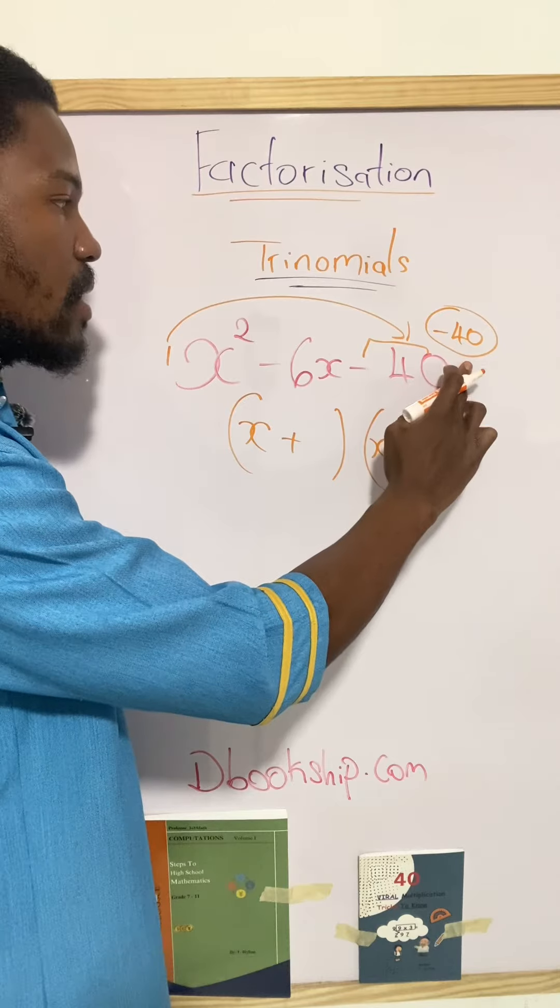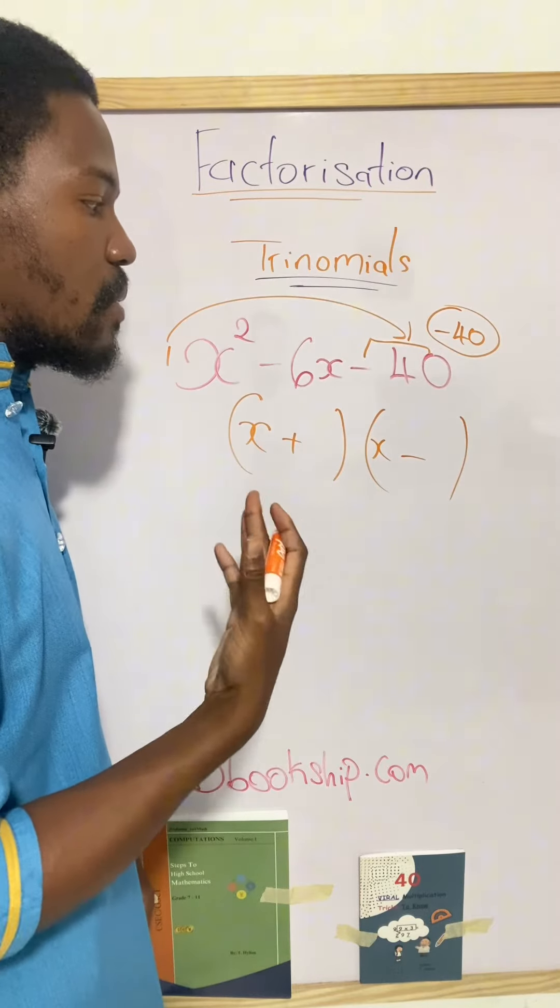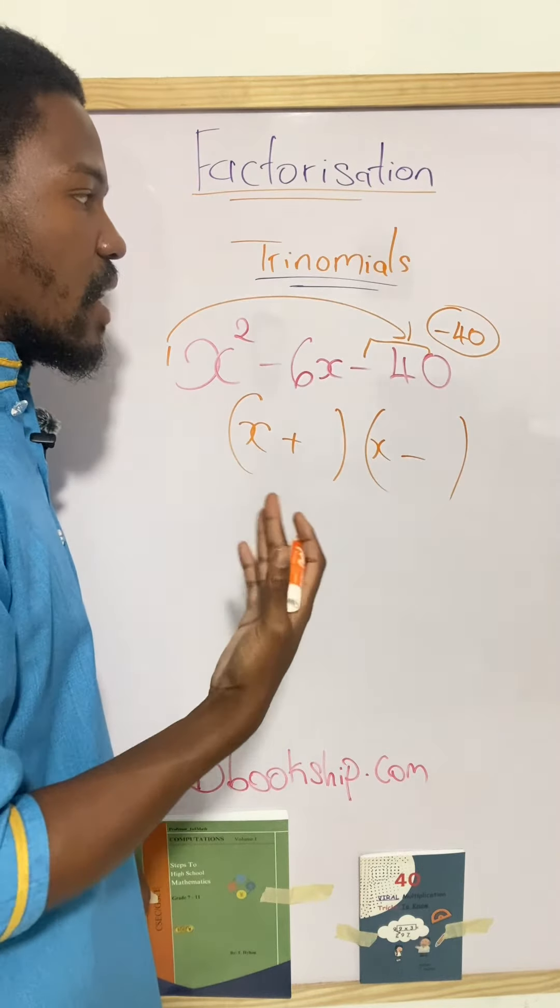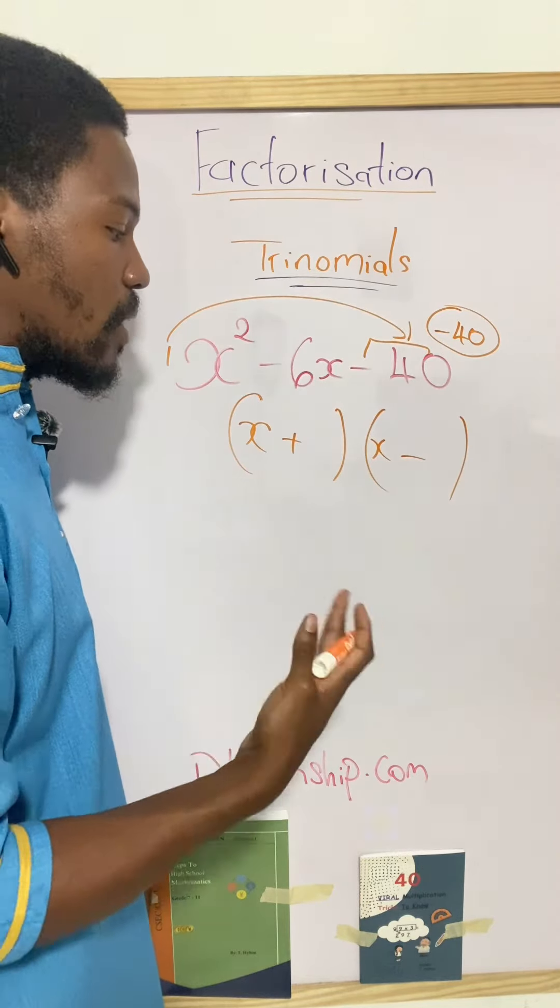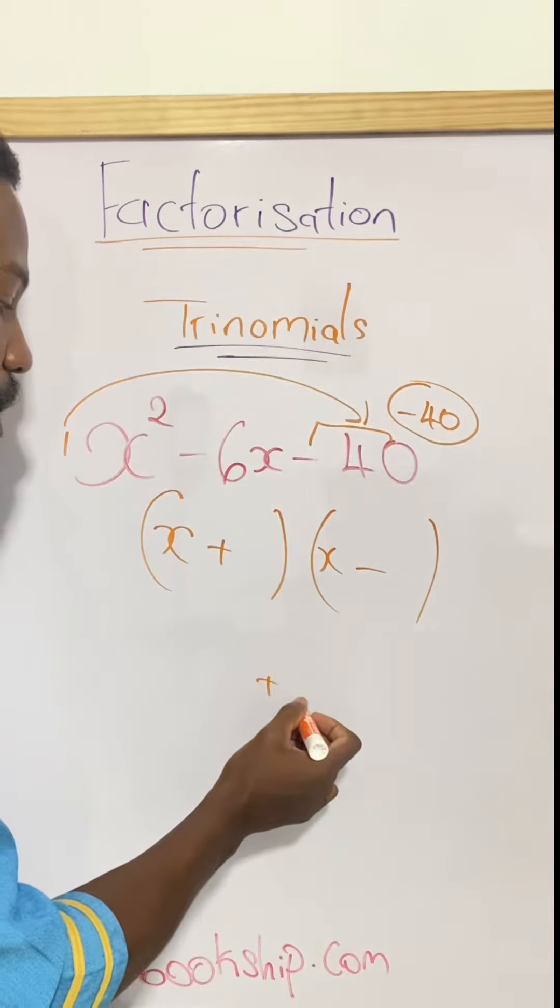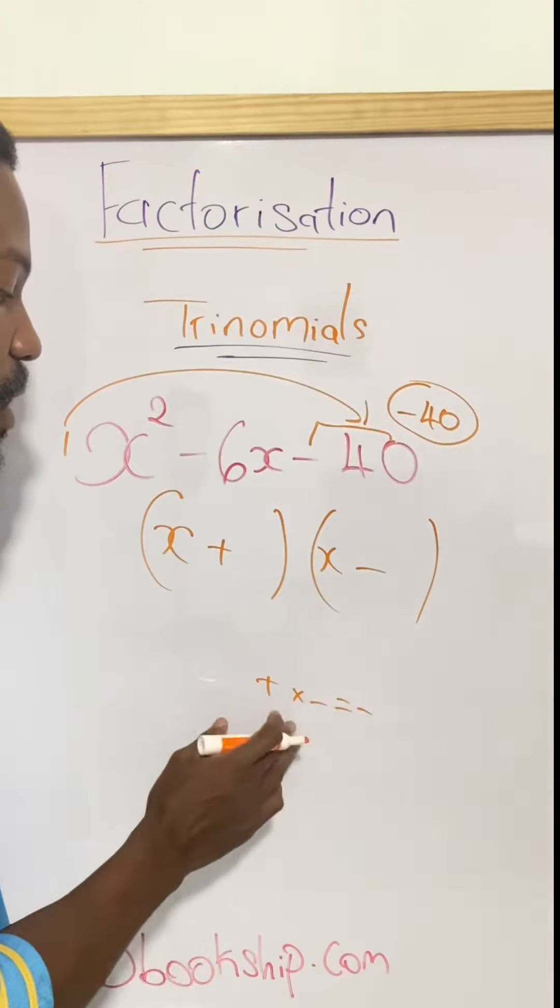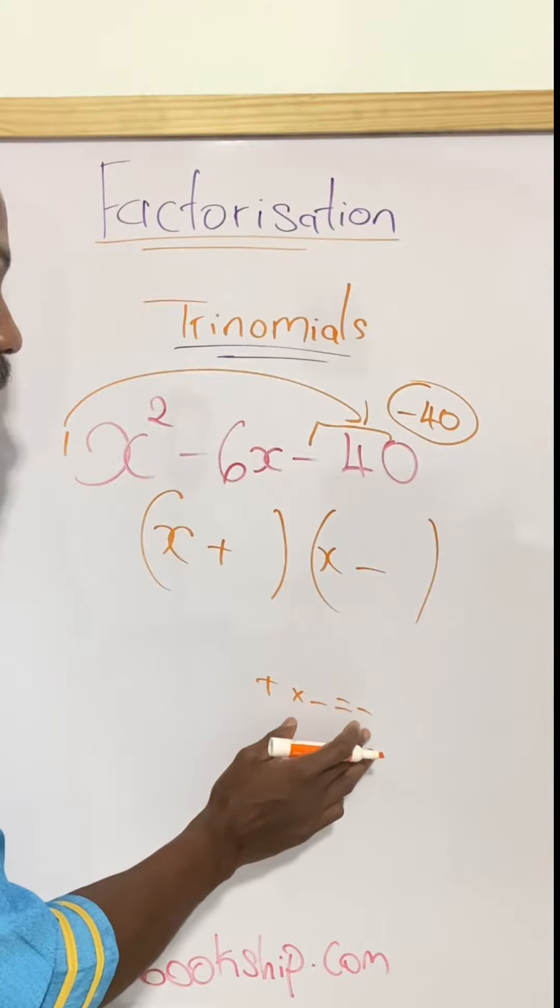Now the aim here is to have two numbers that when multiplied together gives us negative 40. And the only way to get a negative when multiplying is to have one positive and one negative.